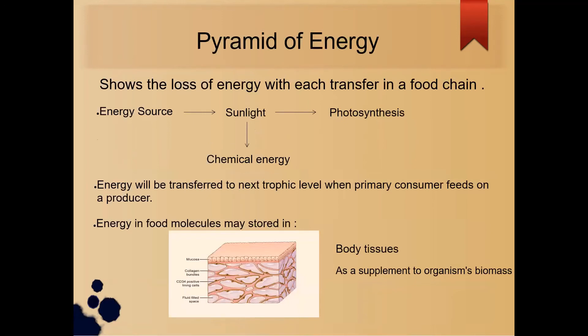Now I'm going to present about pyramid of energy. Pyramid of energy shows the loss of energy with each transfer in a food chain. The energy source comes from sunlight. The green plant will absorb the sunlight to carry out photosynthesis and convert it into chemical energy. Energy will be transferred to next trophic level when primary consumer feeds on a producer. Energy in food molecules may store in body tissues as a supplement to organism biomass